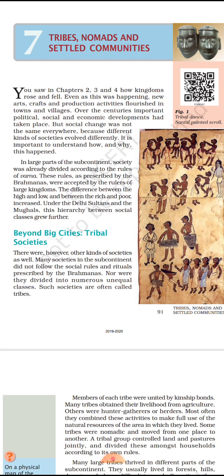Different tribes had different lifestyles. Some tribes were nomadic in nature, which moved over long distances with their animals, survived on pastoral products and bought and sold different goods on their way. For example, the Banjaras are nomadic tribes originally from present-day Rajasthan. Banjaras were the most important trade nomads as the Mughals used them to transport grains. There were also castes of entertainers who performed in different towns and villages for their livelihood.